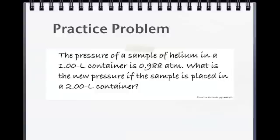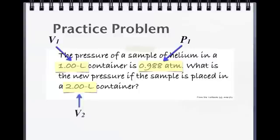In order to solve this problem, we must start with what we know. We know that 0.988 atm is our initial pressure, or P1. We also know that 1.00L is our initial volume, or V1. 2.00L is our new volume, or V2. The variable we are missing is the new pressure, or P2.